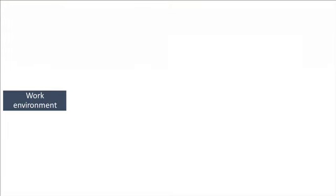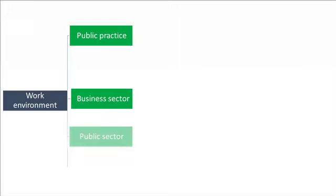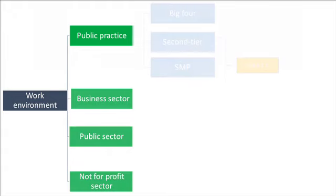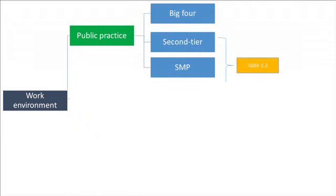These include public practice, business sector, public sector, and not-for-profit sector. Accountants in the public practice can further be differentiated into three categories: the big four firms, second-tier accounting firms, and small practices.